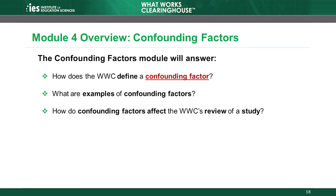The fourth module is about confounding factors. The module reviews the WWC's definition of a confounding factor, which is a study component that makes it difficult or impossible to distinguish the effect of the intervention from the effect of that component. We provide examples of confounding factors and discuss how confounding factors affect the WWC's review of a study.